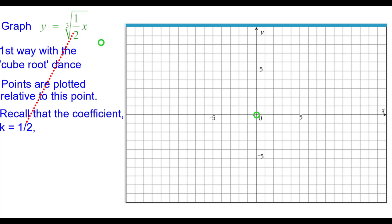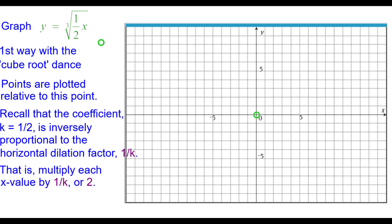Recall that the coefficient k equals one half is inversely proportional to the horizontal dilation factor. That is, we are going to multiply each x value by the reciprocal of a half which is the number two.